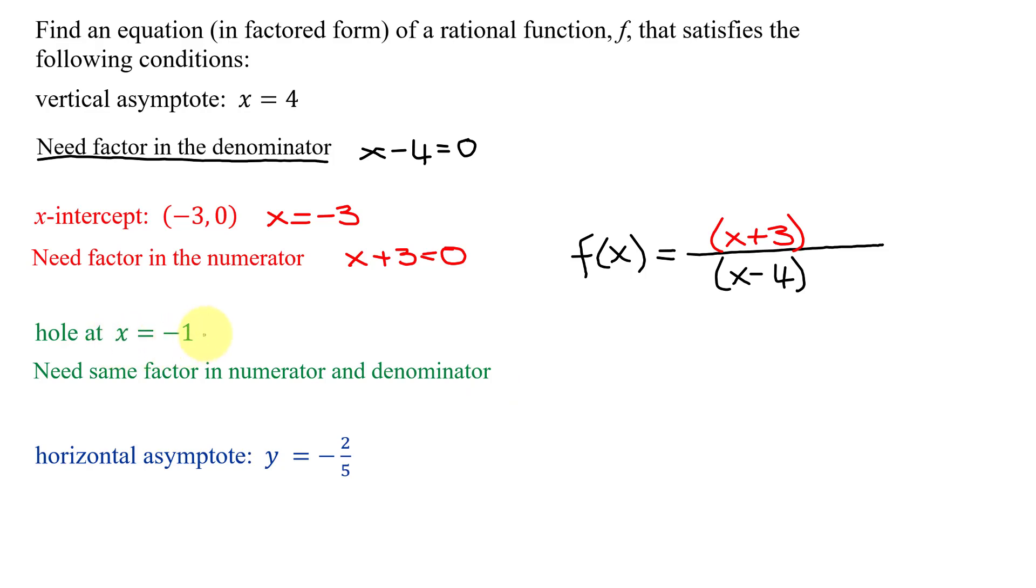And what factor is associated with x equals negative 1? If I add 1 to both sides, I get x plus 1 equals 0. So the common factor in the numerator and the denominator has to be an x plus 1.